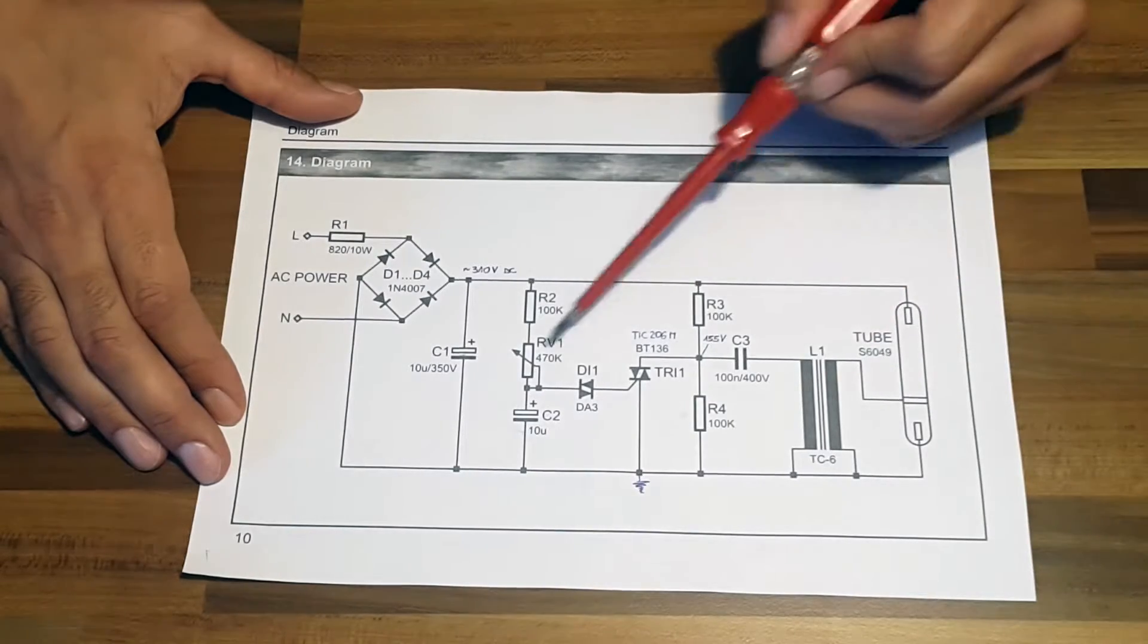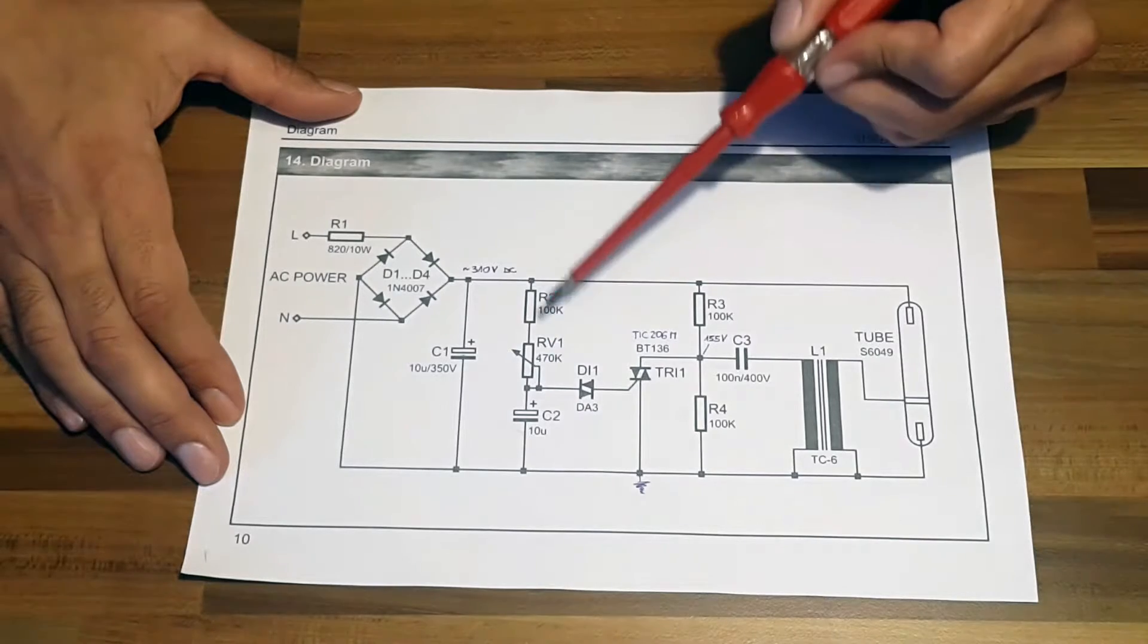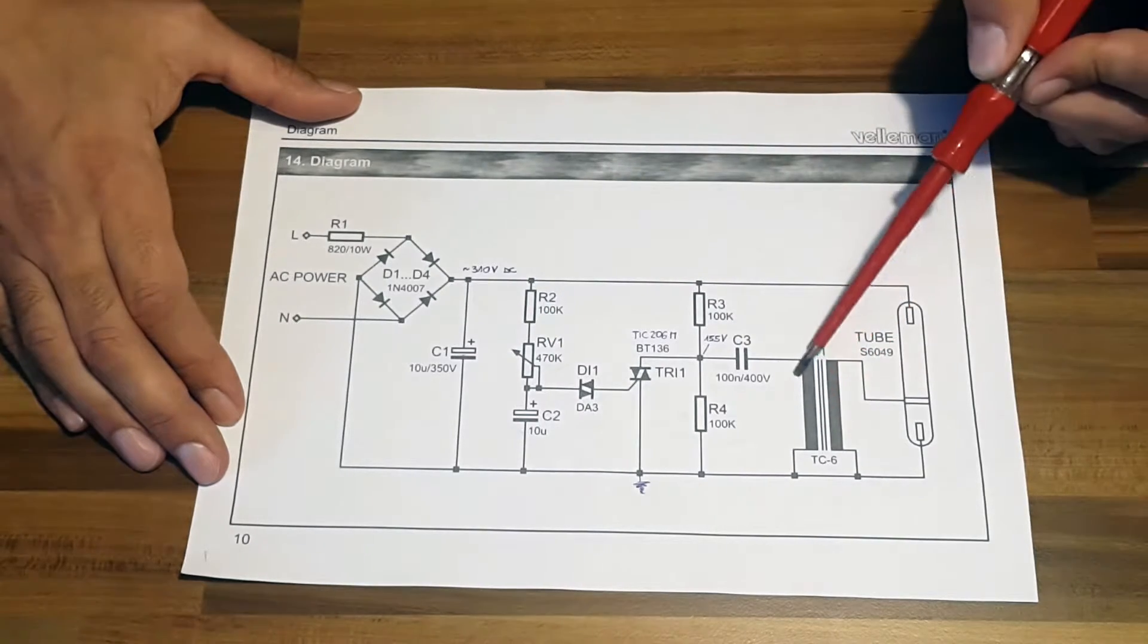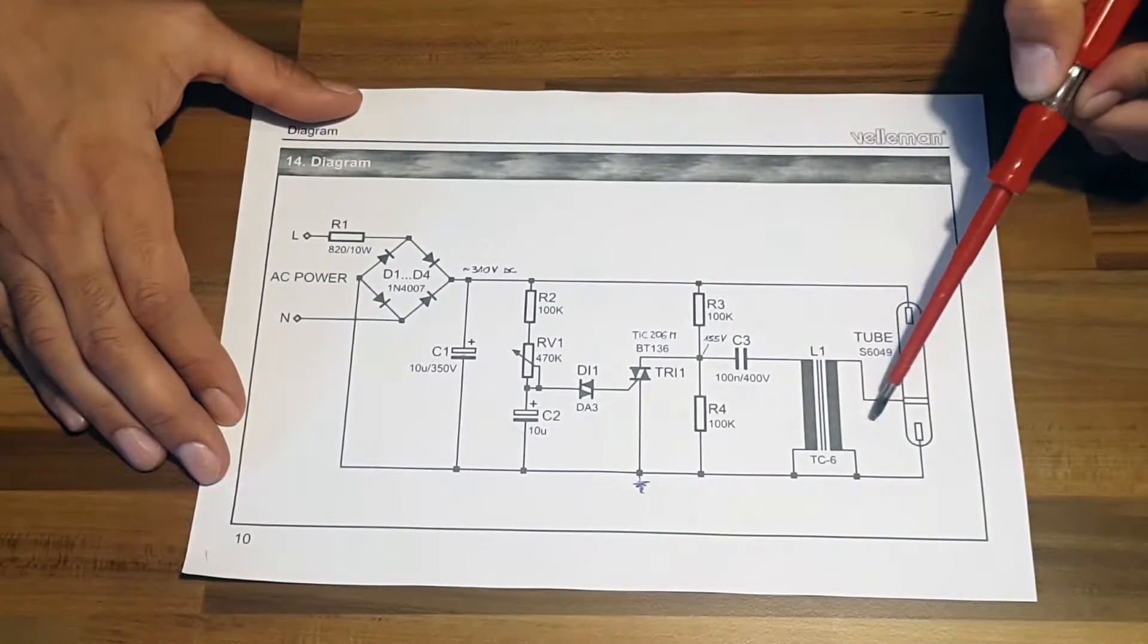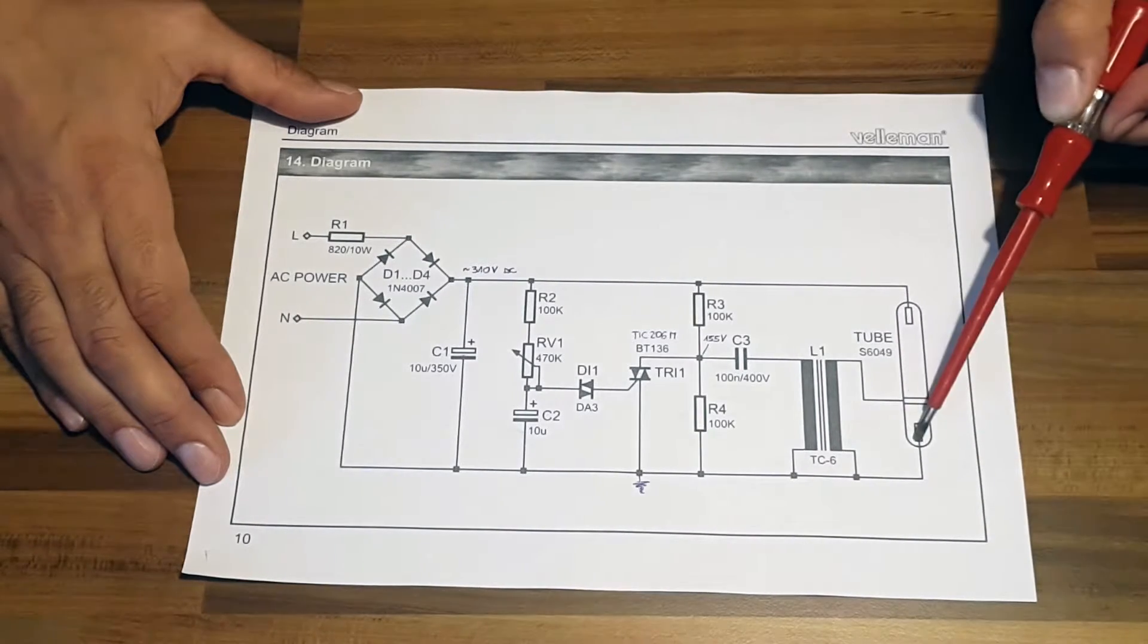The speed can be adjusted by trimmer RV1, 2 to 20 flashes per second. The coil output is around 5 to 10 kilovolts as the high voltage is needed to ionize the xenon gas inside the flash tube. The impulse is very brief.